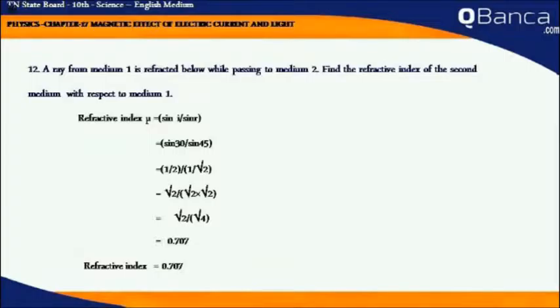1 by 2 divided by 1 by root 2 equals root 2 by root 2 times root 2, which is root 2 by 2. Therefore, cancelling numerator and denominator, it equals 0.707. Refractive index equals 0.707.